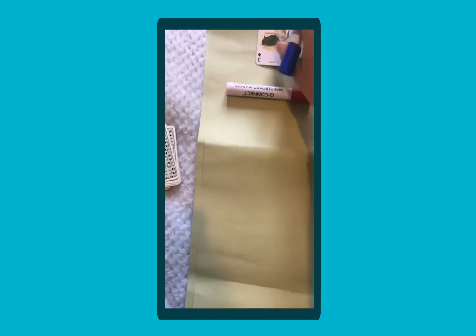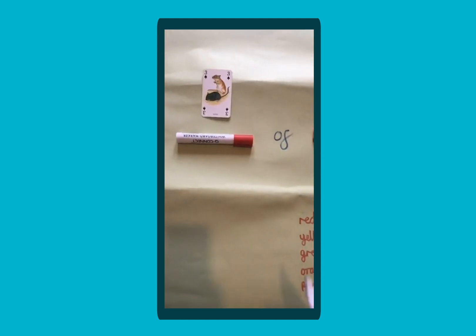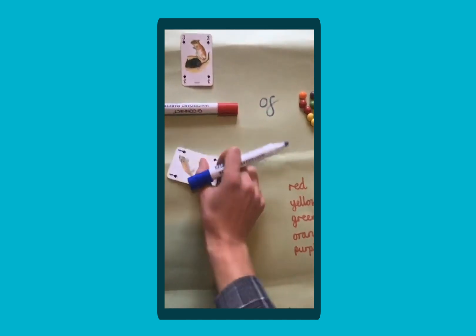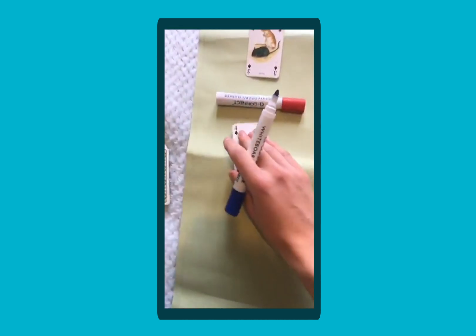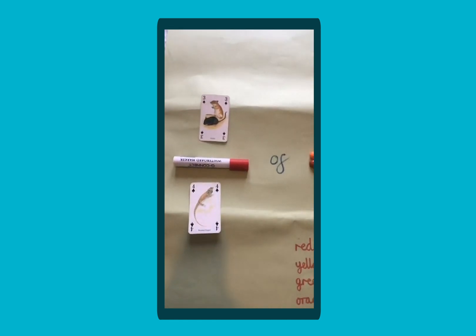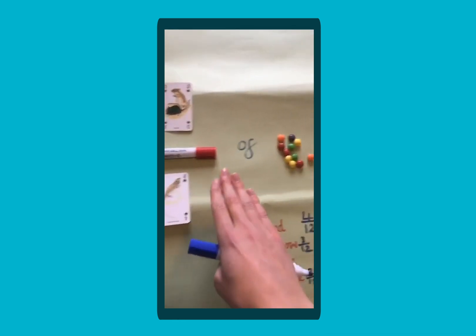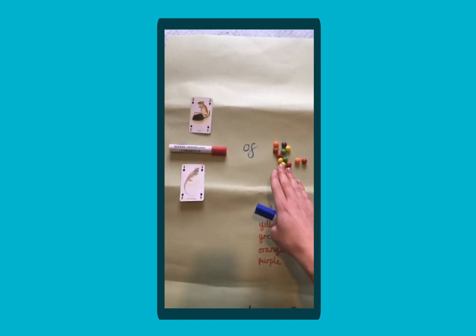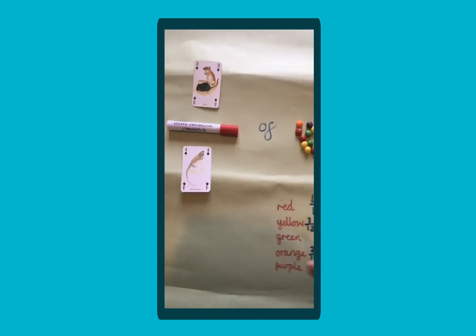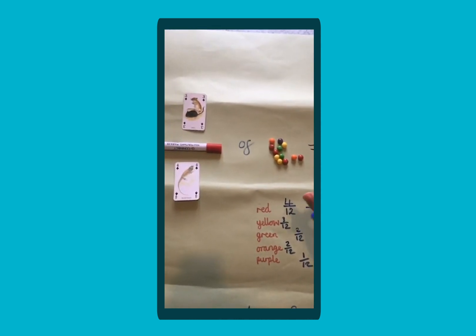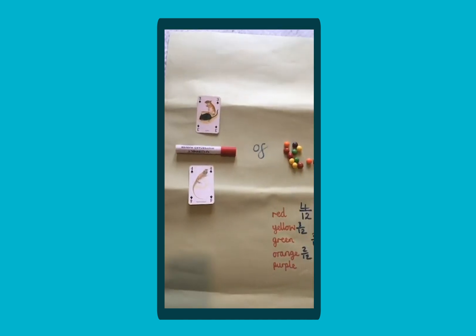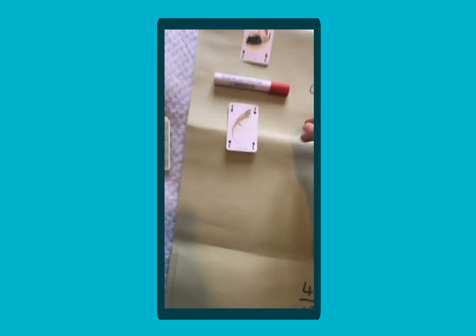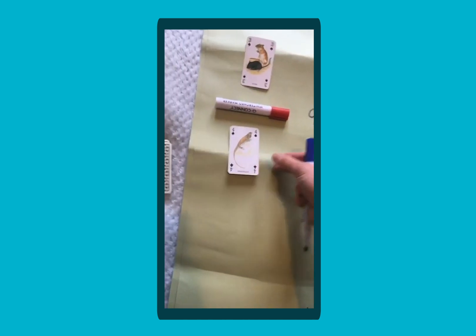So we have a three as our numerator and we have a four, so three quarters. Four is our denominator, three quarters of our 12 sweets equals, and then you'd put your answer in. Remember, divide by the bottom, times by the top. Once you've done that one, you can take away one of the cards.